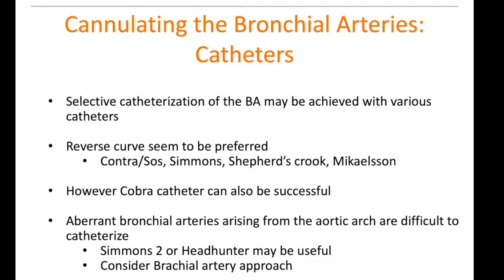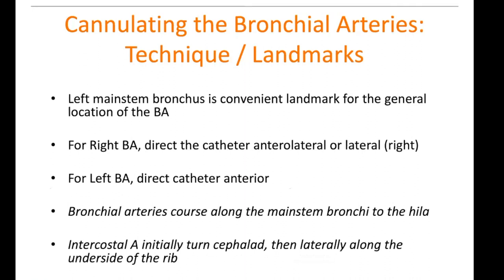Aberrant bronchial arteries arising from the aortic arch can sometimes be very difficult to catheterize. That's why the brachial artery approach might be useful, because you're not taking the standard reverse curve path into those bronchial arteries or intercostal bronchial trunk. The left mainstem bronchus is a convenient landmark, and where it crosses the descending aorta is a good place to look for the intercostal bronchial trunk. For the right bronchial artery, direct your catheter anterolateral or just lateral to the right.